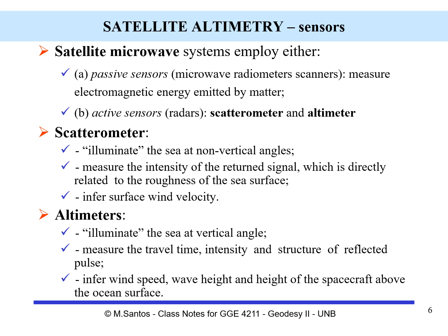When dealing with satellite microwave systems, we have passive sensors and active sensors. Passive sensors, which are microwave radiometers and scanners, measure the electromagnetic energy emitted by the matter — in this case, the body of water. Active sensors, which are radars, emit energy and then measure its return. We have two types of active sensors: scatterometers and altimeters.